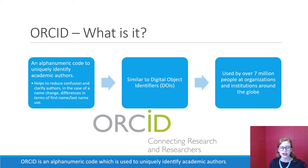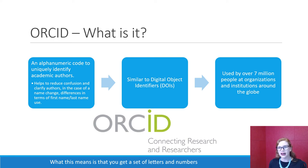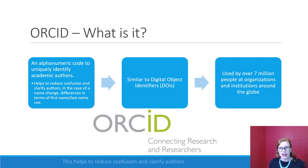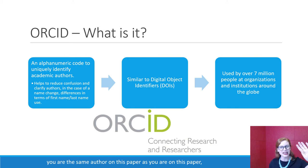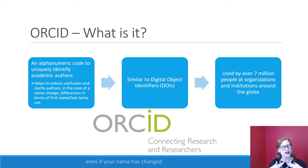ORCID is an alphanumeric code which is used to uniquely identify academic authors. What this means is that you get a set of letters and numbers that are just you — it's like a telephone number that works around the world. This helps to reduce confusion and clarify authors. So if you change your name for whatever reason, this will help let people know you are the same author on this paper as on that paper, even if your name has changed.